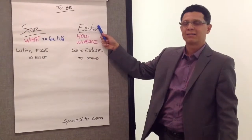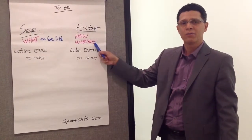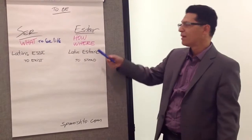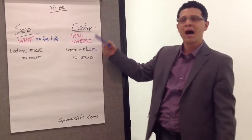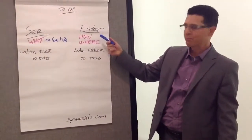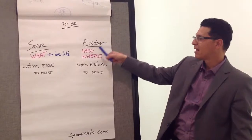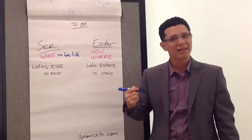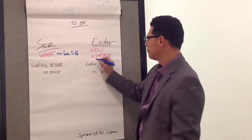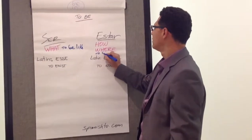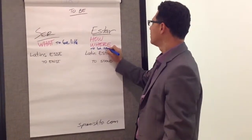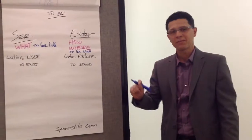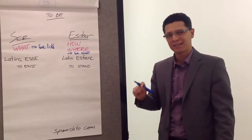Estar is associated with where are you right now, at this moment. And also, it answers the question of how are you. So, estar means how or where to be right now — to be now, at the moment. That's the definition of ser and estar.